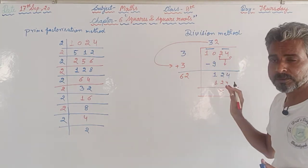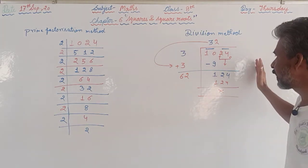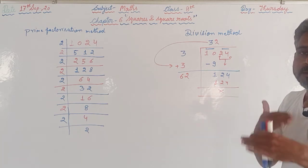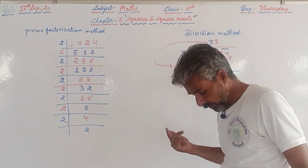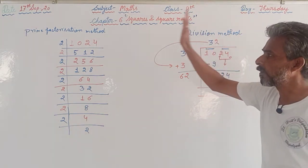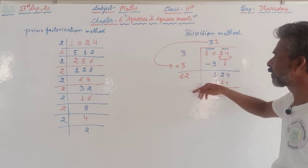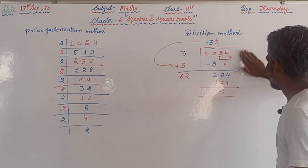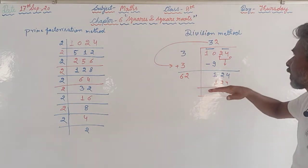As you can observe, the division method is much easier and shorter than the prime factorization method. However, in the division method you need to be careful — your calculations should be fast and you need to apply your brain more, because you have to select the correct digits and multiply quickly. If you do the multiplication in rough work it will take too much time, so you should be fast in your calculations to perform questions using the division method.